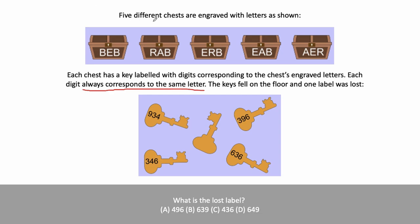Five different chests are engraved with letters as shown in this diagram. Each chest has a key labeled with digits corresponding to the chest's engraved letters. Each digit always corresponds to the same letter. The keys fell on the floor and one label was lost.